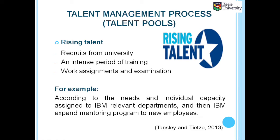The first stage is rising talent. Rising talent are recruits from university who enter the first talent pool and undergo an intense period of training, work assignments, and dissemination. For example, IBM recruits must complete intensive training for three months. In this first period, they are separated from university and accept training. They may feel tired and stressed, and then they pass the exam and move to the next phase, where they are assigned to IBM's relevant departments according to individual capacity.